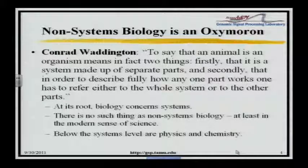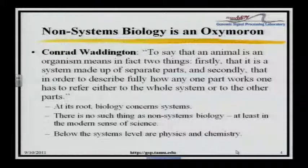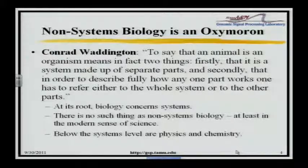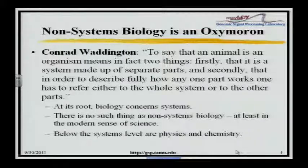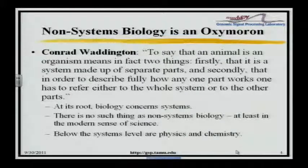Non-systems biology is an oxymoron. There's no such thing as non-systems biology, because life involves systems. Waddington again, in 1935: 'To say that an animal is an organism means, in fact, two things. Firstly, that it is a system made up of separate parts. And secondly, that in order to describe fully how any one part works, one has to refer either to the whole system or to the other parts.' In other words, there is no non-systems biology. At its root, biology concerns systems. Below the systems level is where we have physics and chemistry.